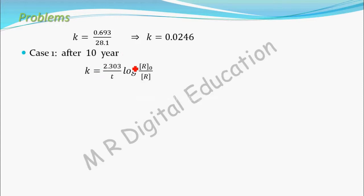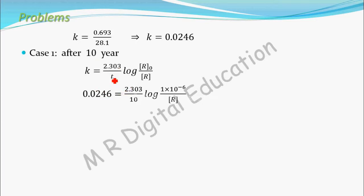Using the first-order formula, substitute k = 0.0246: 0.0246 equals 2.303 divided by time of 10 years, multiplied by log of initial concentration 1×10⁻⁶ divided by R, where R is the concentration remaining after 10 years.